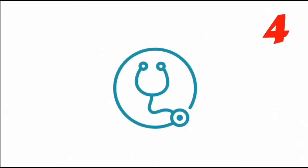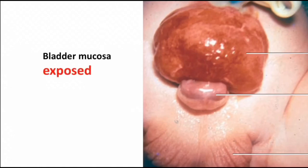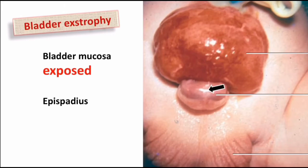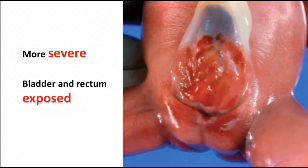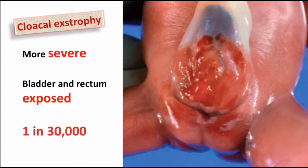In the next clinical disorder, the bladder is averted and the bladder mucosa is exposed. The baby also has epispadias, meaning the urethra opens on the dorsal surface of the penis. This is known as bladder exstrophy, occurring due to failure of closure of the anterior body wall — 1 in 5,000 births. In a more severe form, both the bladder and rectum are exposed due to a defect in the cloaca and failure of formation of the urorectal septum. This is known as cloacal exstrophy, and is also a rare condition.